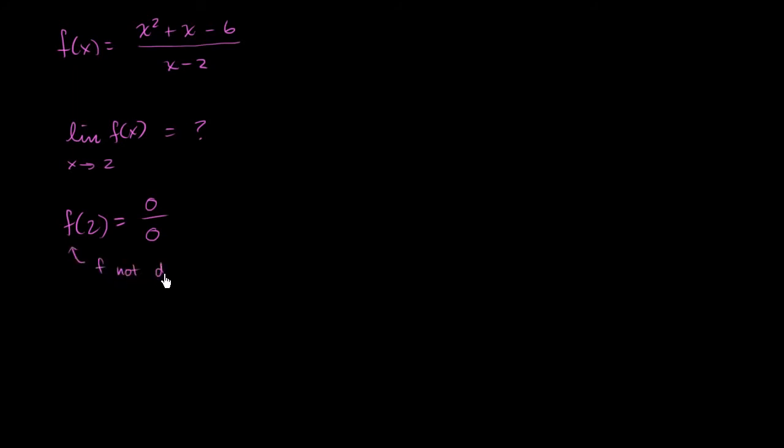So not defined at x is equal to 2. Even if this did evaluate, if it was a continuous function, then actually the limit would be whatever the function is. But we see very clearly that the function is not defined here. So let's see if we can simplify this. And we'll also try to graph it in some way.